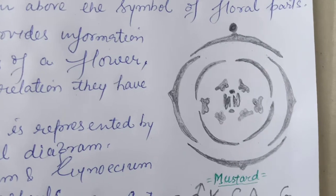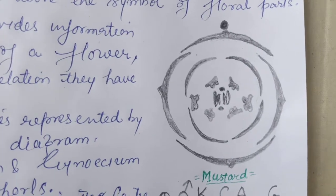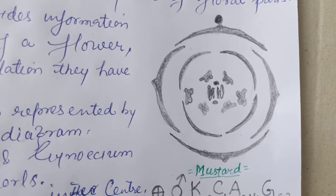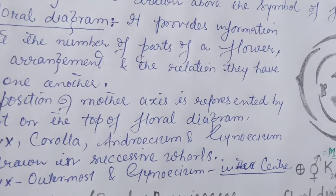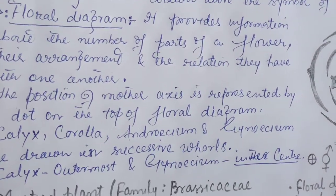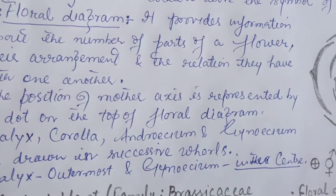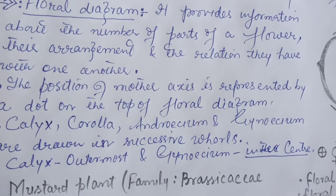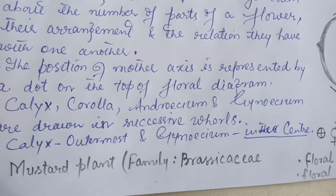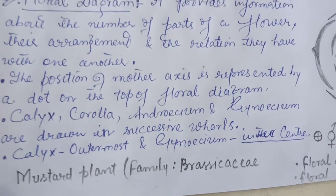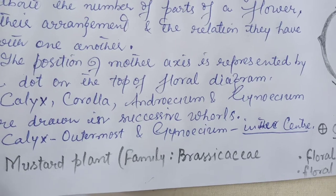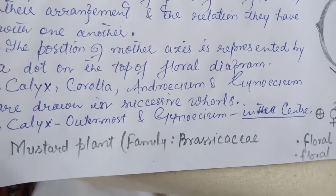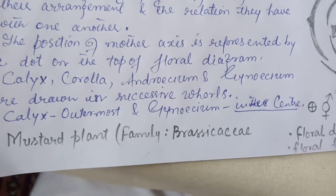This is the view of a floral diagram of the mustard flower. It provides information about the number of parts of a flower, their arrangement, and the relation they have with one another. The position of the mother axis is represented by a dot on the top of the floral diagram.